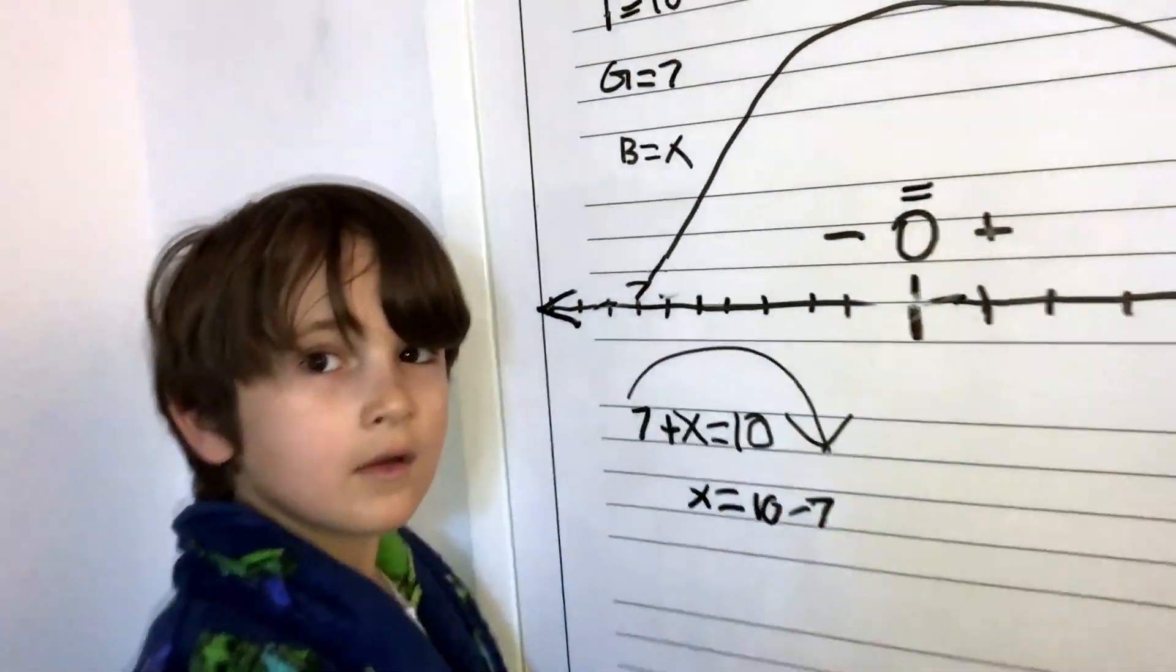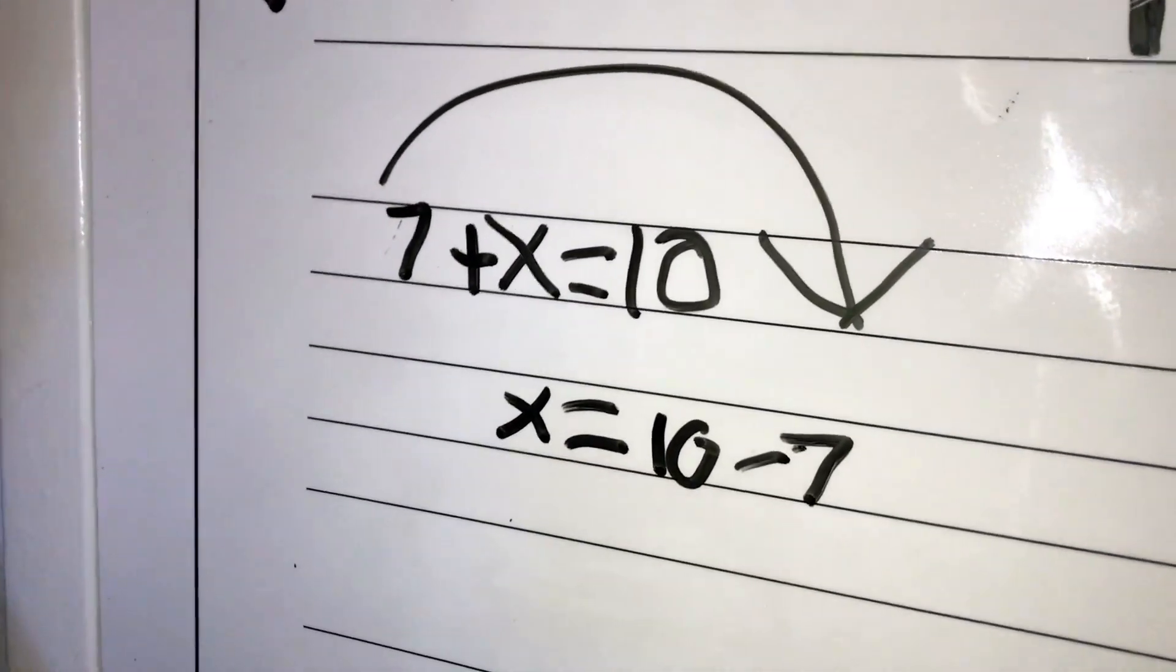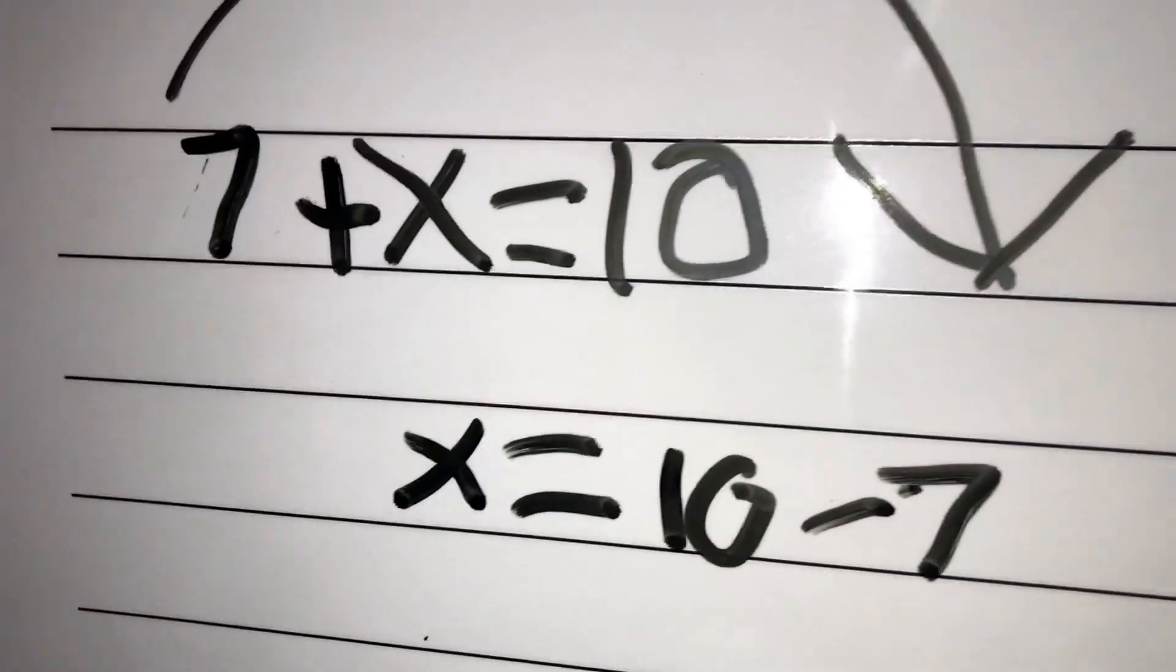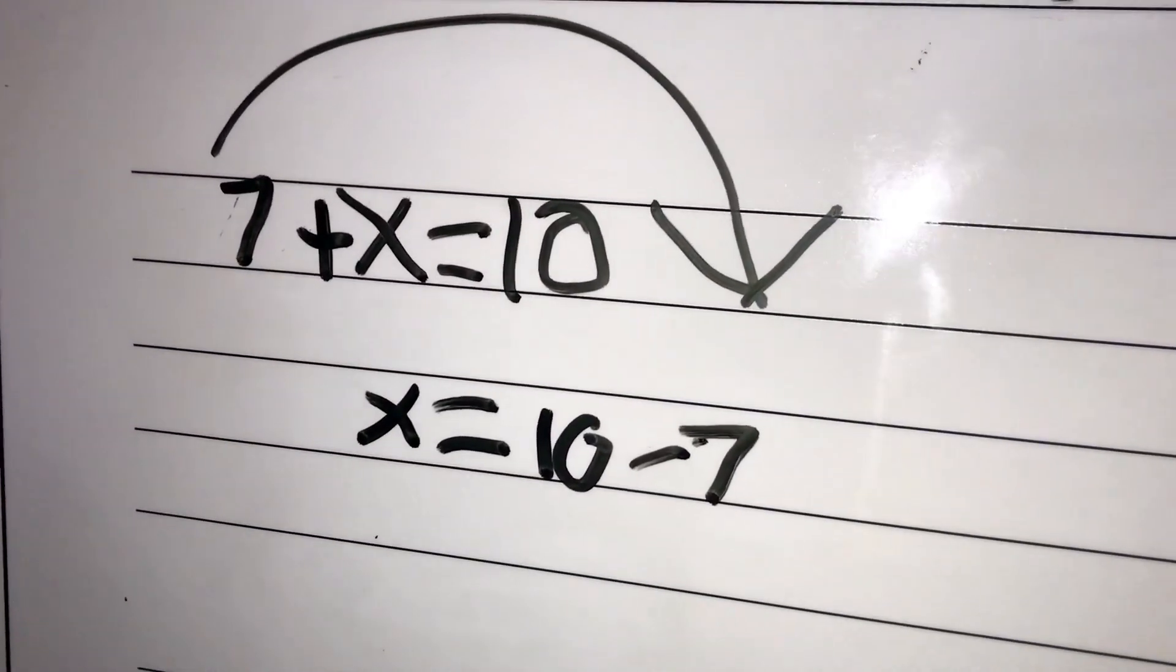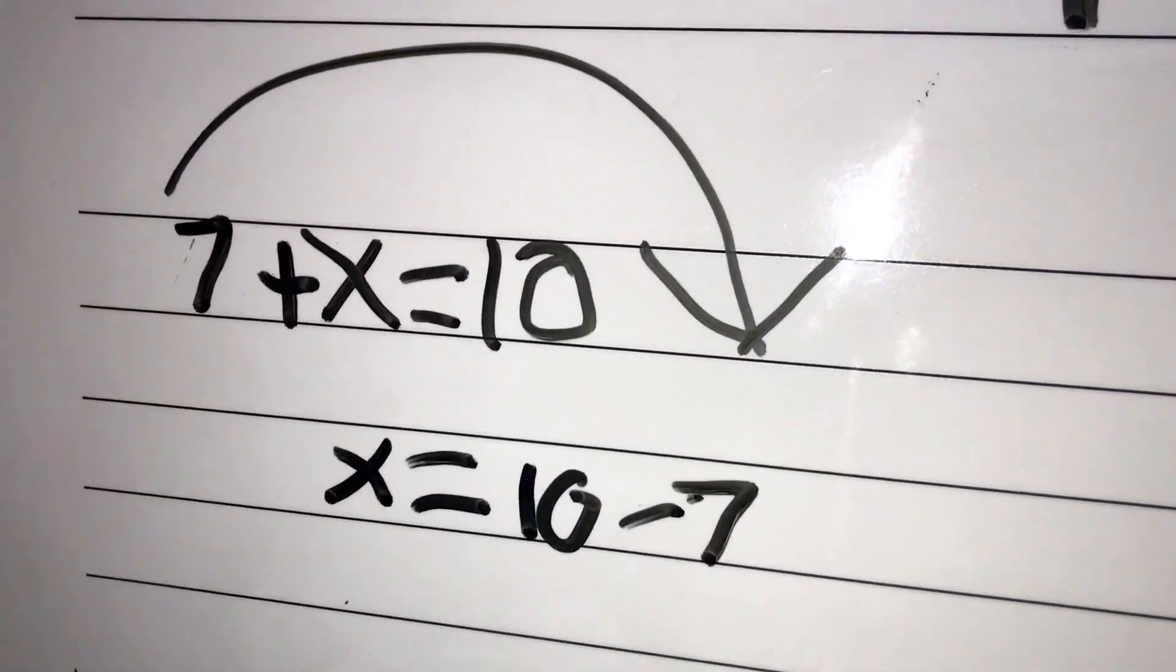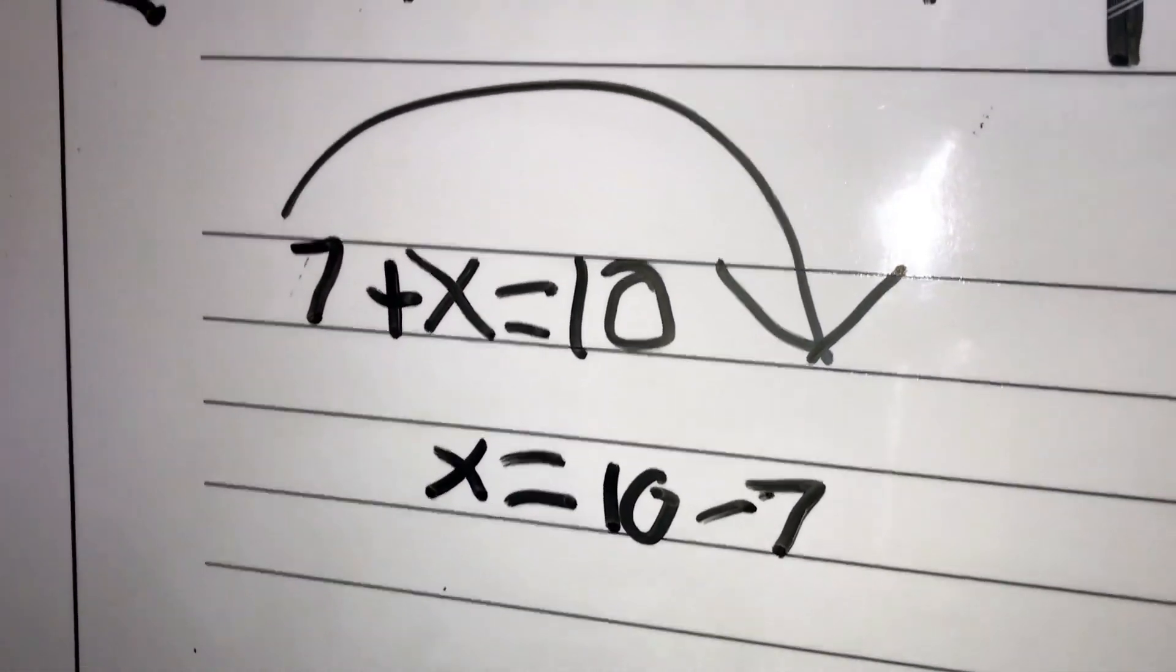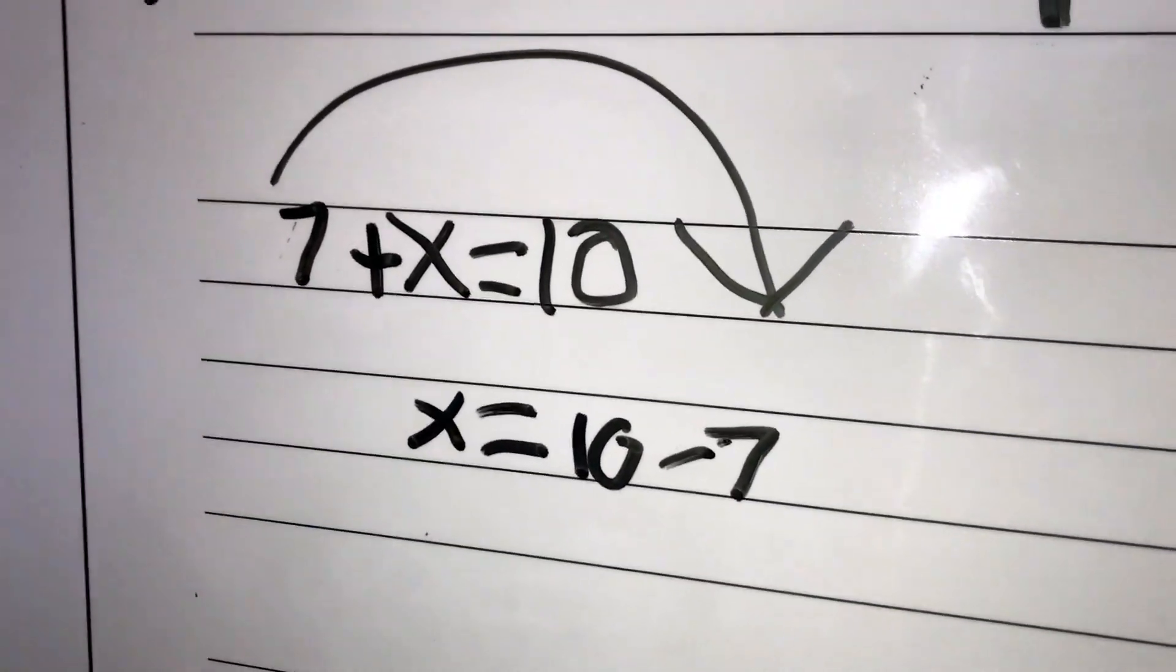So now we have... We have an equation. Seven girls plus x boys equals ten total people playing volleyball at the beach. Now we're going to solve for x. x stays on one side of the equation and all of the numbers go onto the other side of the equation. Ten remains where it was, but seven is hopping over the equals onto the other side. And by doing so, it's changing from being positive seven to a negative seven. Yes.